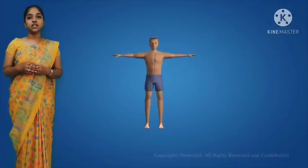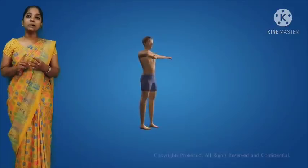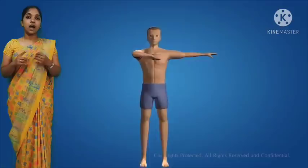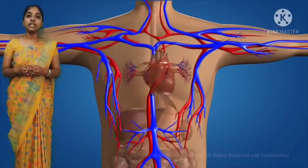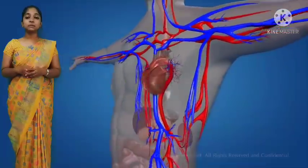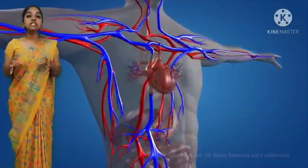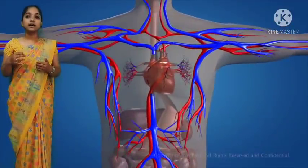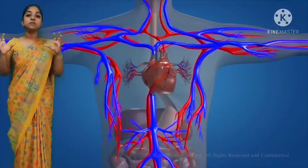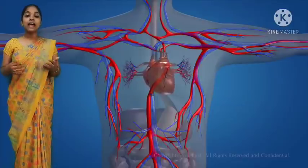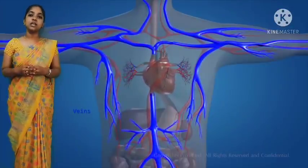What are the organs in the circulatory system? The circulatory system consists of the heart, blood, and blood vessels. What does the circulatory system do in our body? It helps to transport different substances like nutrients, gases, and waste inside the body.